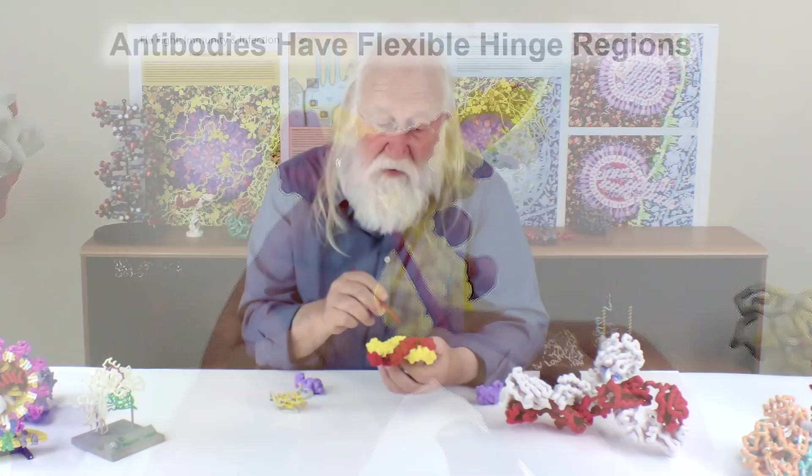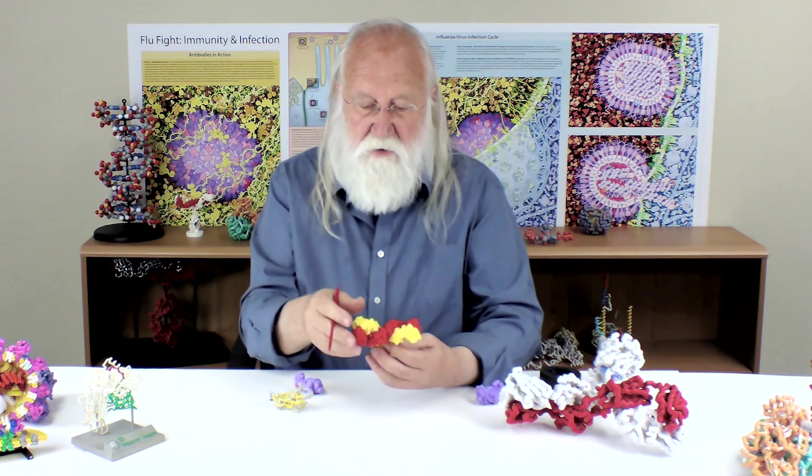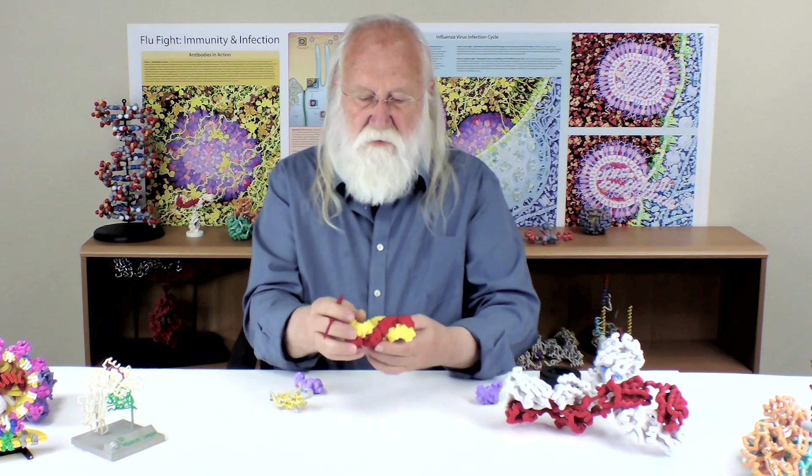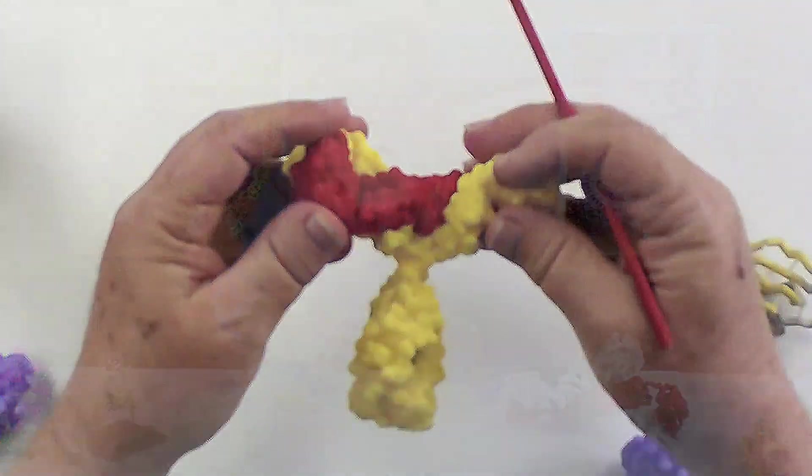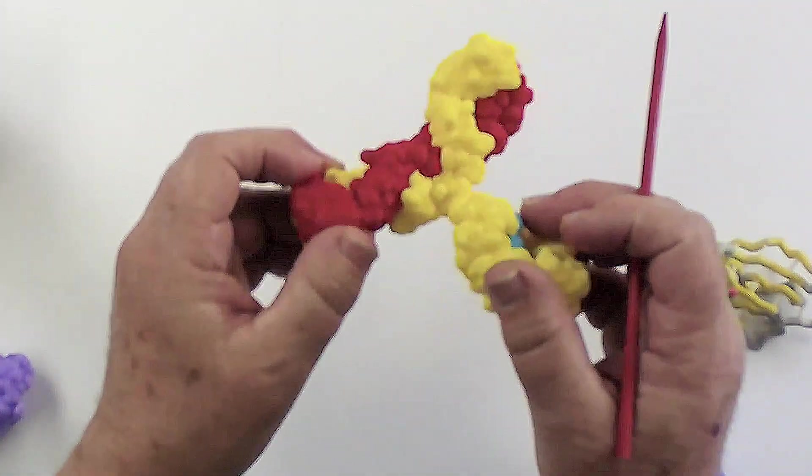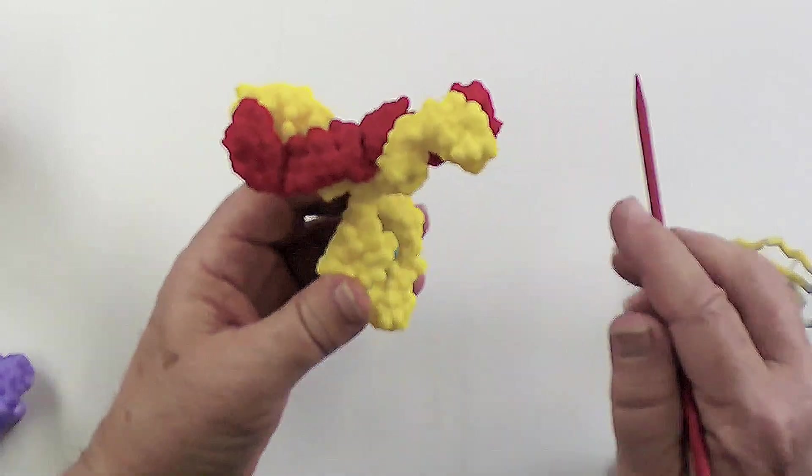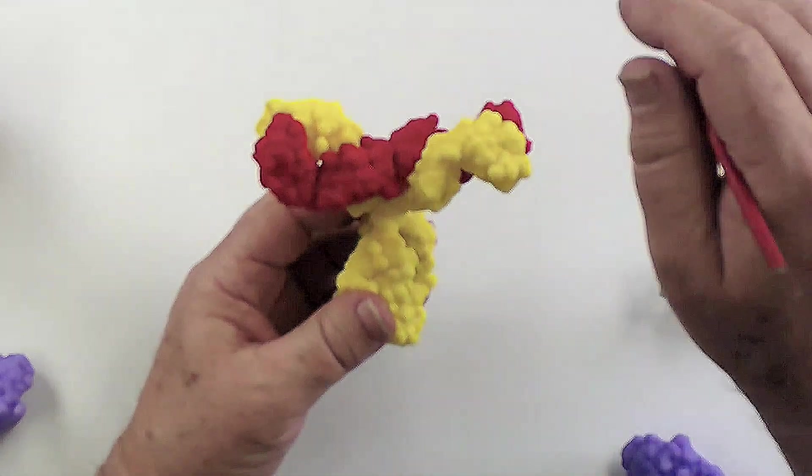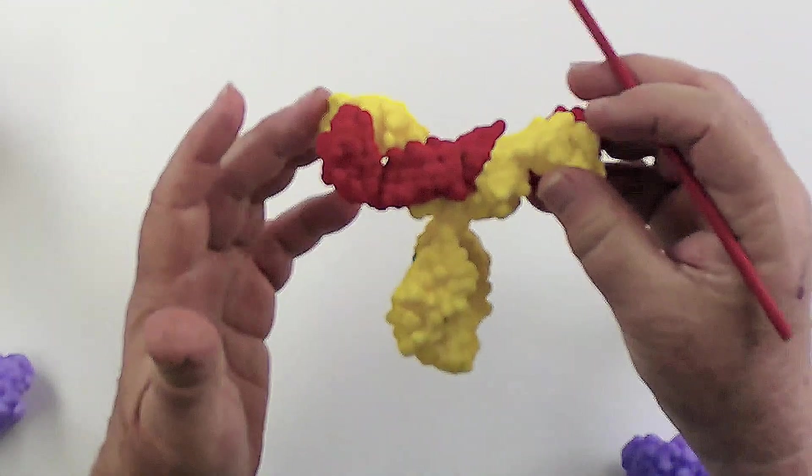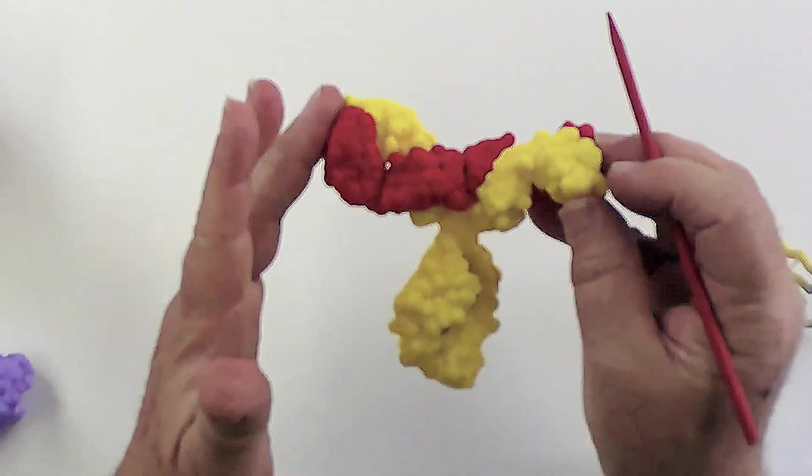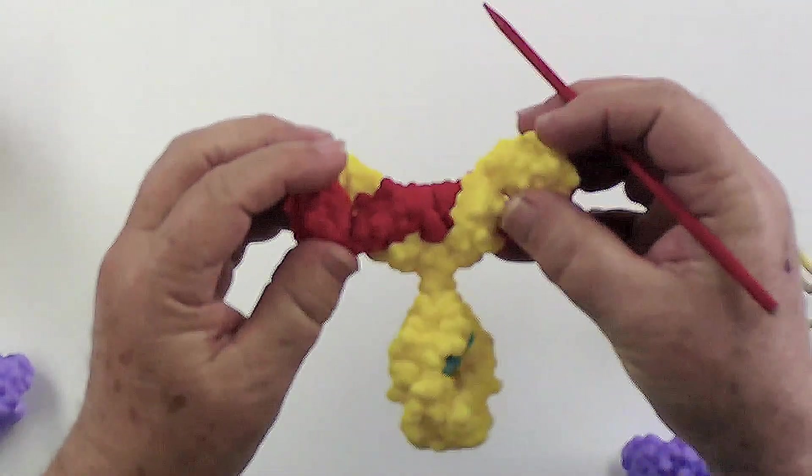When we create these models, we use a sort of idealized protein databank file in which the protein is very symmetrical. It's sort of standing up straight. But in fact, these things can move around a lot. And that's because you don't know where these antigens are going to be on the surface of a virus, for example. So therefore you want this to be flexible.